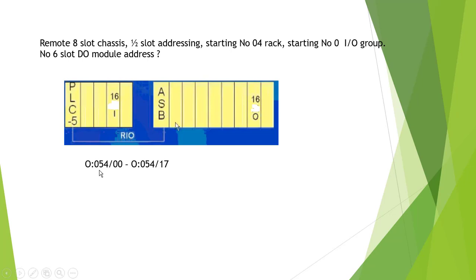So the address goes from 0054:00 to 0054:17. That's 16 bits. If you use a 32-bit module, that's 0054:00 to 0054:70, and output 0055:00 to 0055:70.